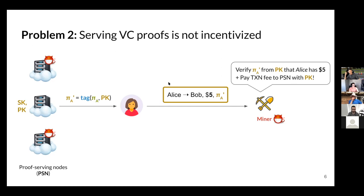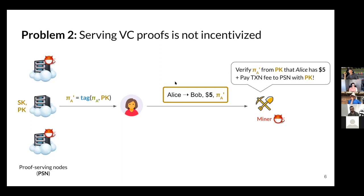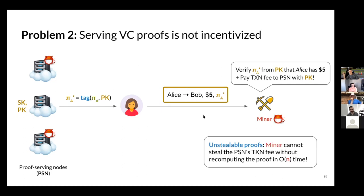You're not trusting the miner to pay, because the validity of the block changes: if a proof is tagged with PK, the reward must go to that PK, and if the miner doesn't reward the PK, other miners reject the block — just like with normal transaction fees. But simply signing doesn't work, because a signature can be removed and another appended. We want unstealability: a miner or any adversary cannot steal the proof serving node's transaction fee without recomputing the proof from scratch. To change the tagged PK to a different PK, you'd have to break a hard cryptographic assumption.